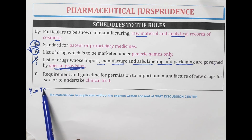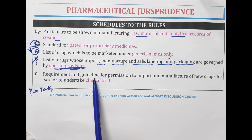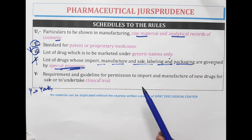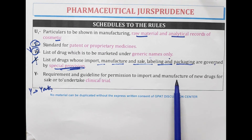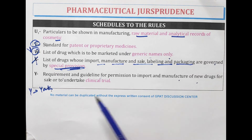Schedule Y — Y for yak, which is an animal. Schedule Y covers the requirements and guidelines for permission to import and manufacture new drugs for sale or to undertake clinical trials.